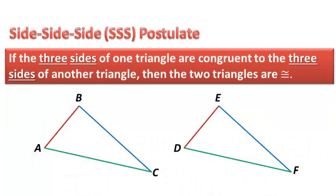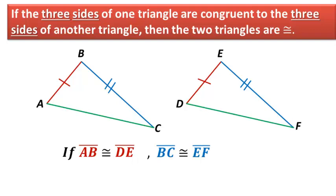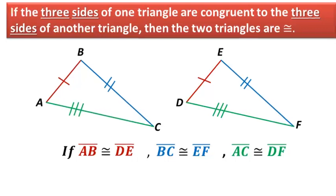Let's take a look at these two triangles. Let's say that we're given that segment AB is congruent to segment DE, segment BC is congruent to segment EF, and segment AC is congruent to segment DF. This would be enough to use the side-side-side postulate.